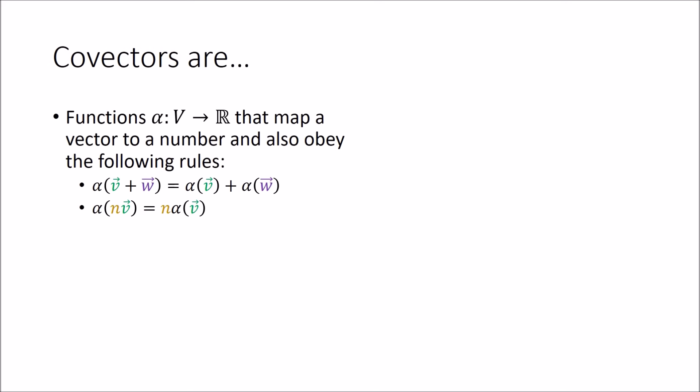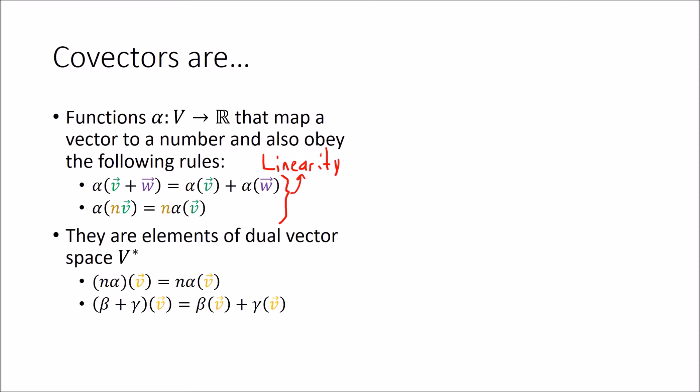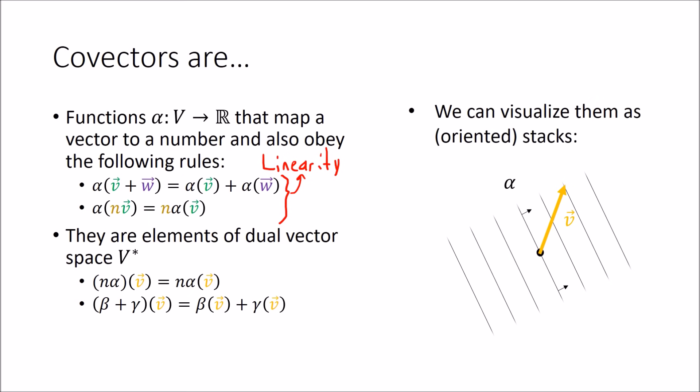To sum up: covectors are functions from vectors to the real numbers. These functions have the properties that we can add and scale the inputs or add and scale the outputs to get the same answer — that's called linearity, so these are linear functions. The set of all covectors that act on a vector space V together form the vector space V star, and these covectors have their own adding and scaling rules. Finally, we can visualize covectors as oriented stacks of lines — when a covector alpha acts on a vector V, we just count how many lines the arrow pierces to get the answer.